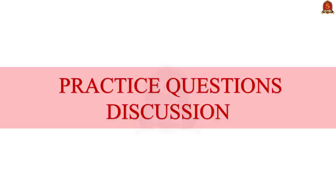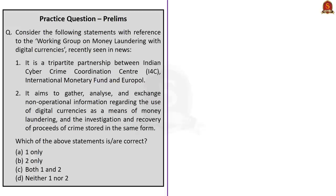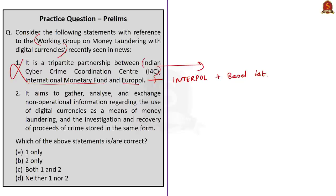Now let's move on to the practice questions discussion session. Question 1: Consider the following statements with reference to the Working Group on Money Laundering with Digital Currencies recently seen in news. Statement 1: It is a tripartite partnership between Indian Cyber Crime Coordination Centre, International Monetary Fund and Europol — this is incorrect, as it is a tripartite partnership between Europol, Interpol and the Basel Institute on Governance. Statement 2: It aims to gather, analyze and exchange non-operational information regarding the use of digital currencies as a means of money laundering and the investigation and recovery of proceeds of crime stored in the same form — this is correct. The question asks for the correct statement, so the answer is option B: two only.